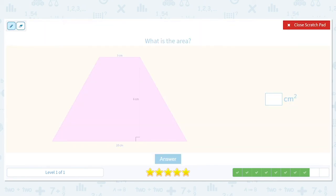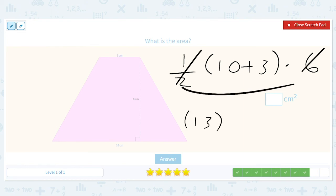Okay, what is the area here? One-half, 10 plus three times six. So we'll do the one-half and the six this time. I'll get 13, right? 10 plus three is 13. One-half, six is three. So it should just be 39 square centimeters.